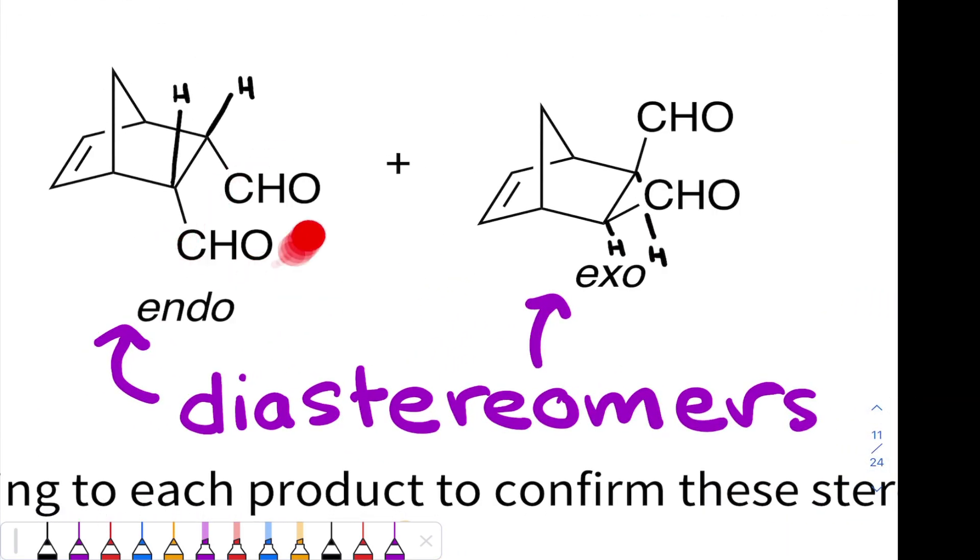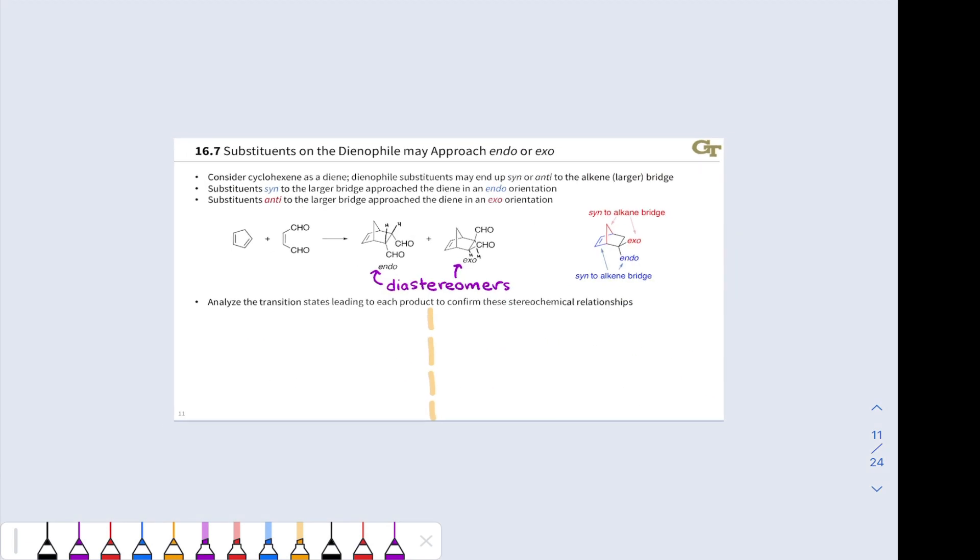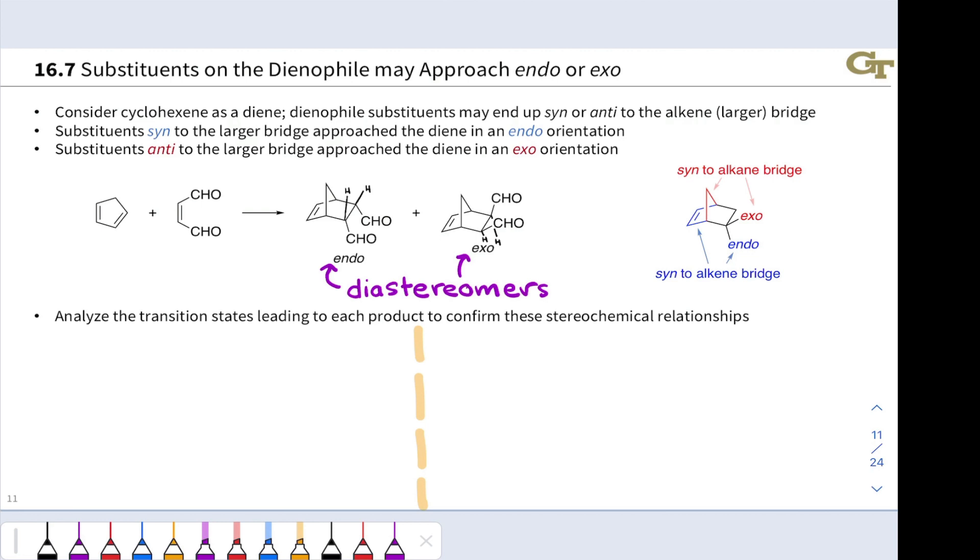These aldehydes are trans to the CH2 in the structure on the left, and cis to the CH2 in the structure on the right. They're diastereomers of one another. And so we should expect that one will be favored over the other, since these diastereomers are going to have different energies and be formed at different rates.